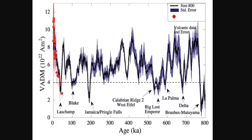Below that baseline of low field intensity, mass extinctions occur. The last one was the end of the Neanderthal. There was also the Blake extinction, the Pringle Falls extinction, the Lost Emperor, the Cambrian Ridge extinction, the Delta extinction, and then the Brunhes-Matuyama — the big one. Look how close we came just 180,000 years ago, and again 42,000 years ago — very low. And once again, we're approaching that zero point where the field may flip.